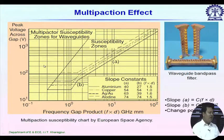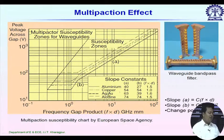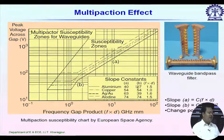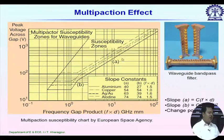The multipaction phenomenon is more prominent at lower values of f×d. So for a given device, if the gap compared to its lambda is very small, the multipaction probability increases. There are several curves for different types of metal — aluminum, copper, silver, gold, and alodine. For the A-region, the slope is 40 for aluminum; for the B-region it is 27. For the A-region it varies as C×f×d, and for the B-region it is f×d squared.